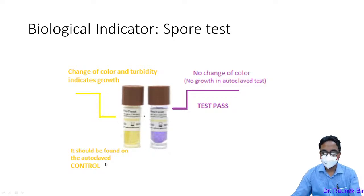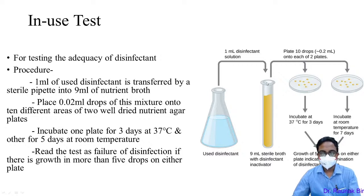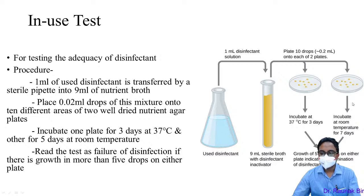For testing the adequacy of disinfectants, we use the in-use test. Take 1 ml of disinfectant and transfer it to 9 ml of nutrient broth, mix, and from the 10 ml mixture place 0.2 ml as 10 drops onto two plates. Incubate one plate at 37°C for three days and the other at room temperature (22°C) for seven days. If more than five colonies appear on either plate, discard — there is failure of disinfection.